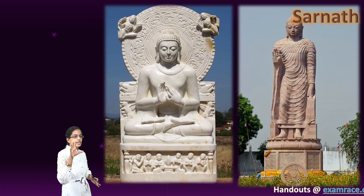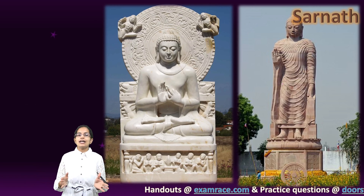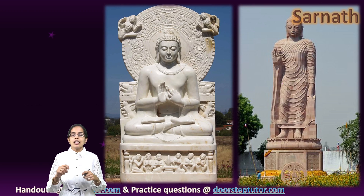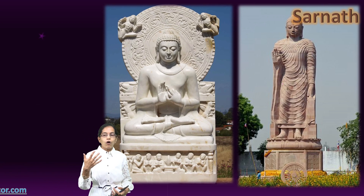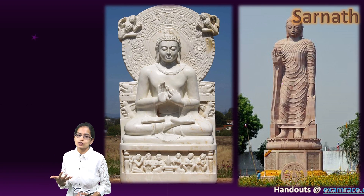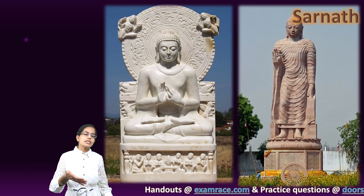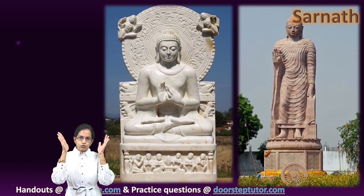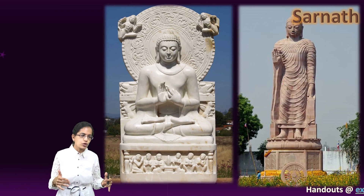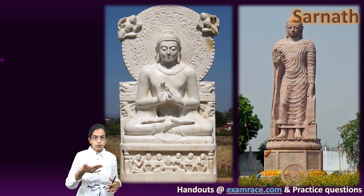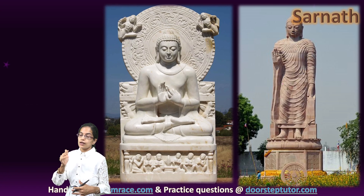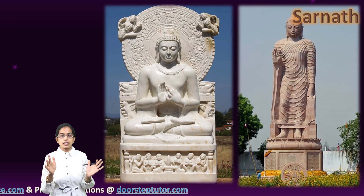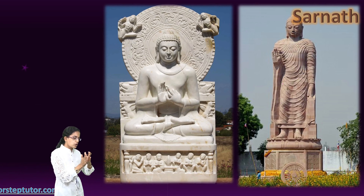In Sarnath style, the body was much more slender. Drapery was seen on both shoulders, and Buddha was shown in a meditating position, representing the idea of the Dharmachakra Parivartan — the preachings of Buddha at Sarnath. The body was slender and elongated. The face was less round compared to Mathura style. The ears and earlobes were longer, the eyes were half closed, but the lower lip was much more protruding, making it unique.